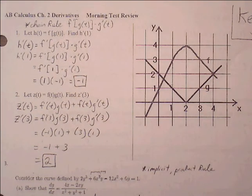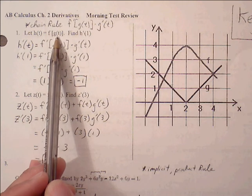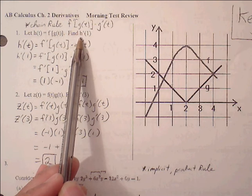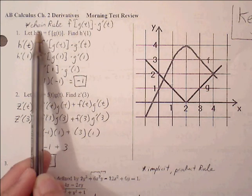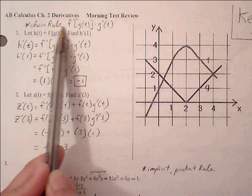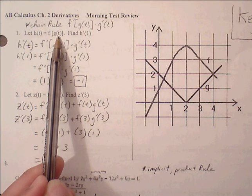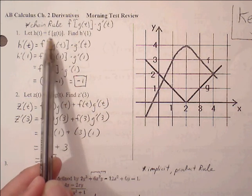This is page one of the chapter two derivatives morning test review. Number one: let h equal f, find h prime of one. So this is going to be a multi-step problem. To find h prime of one, we first need to find h prime of t. So h prime of t would require us to find the derivative of this function. Notice that this is f of g of t, so we have a composite function within another function. So if we want to find the derivative of a composite function, we're going to have to go through chain rule.